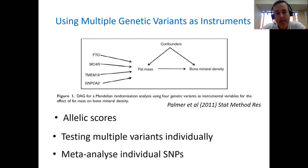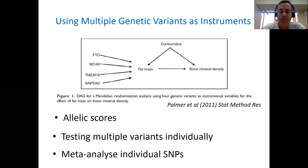We could also test multiple variants individually and then meta-analyze them together. All the different SNPs should provide the same estimate of the causal effect if there's no pleiotropy operating. So if we meta-analyze estimates of those causal effects, that should also improve our power and precision.